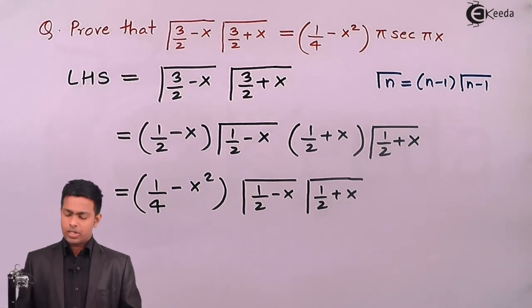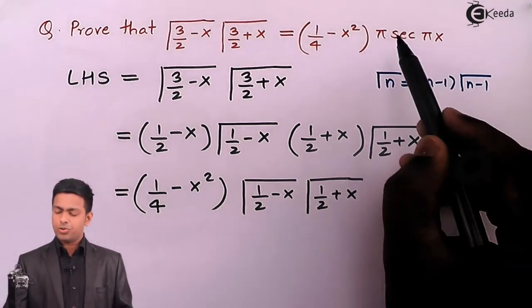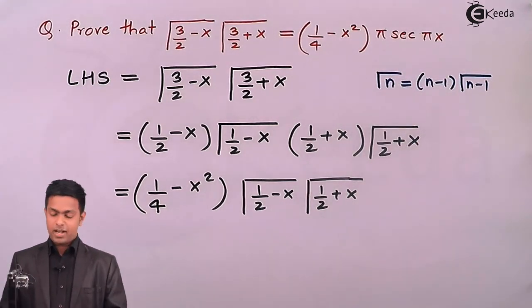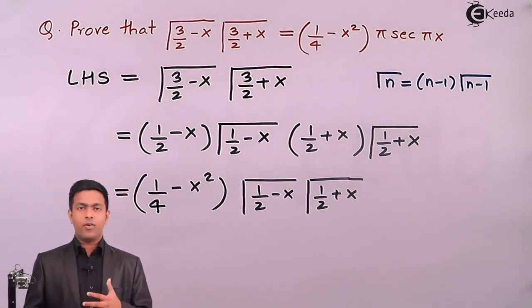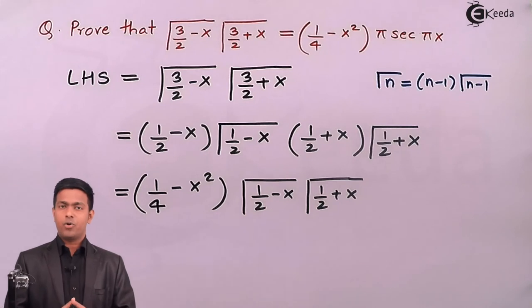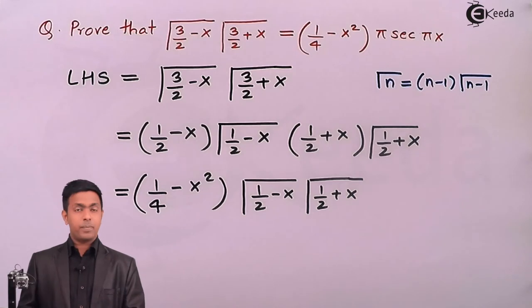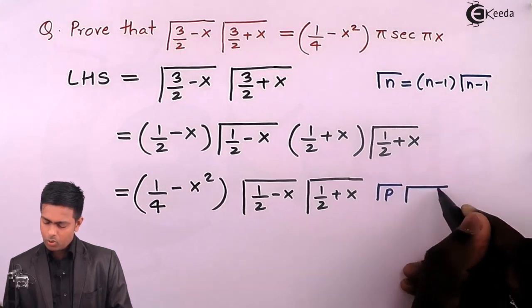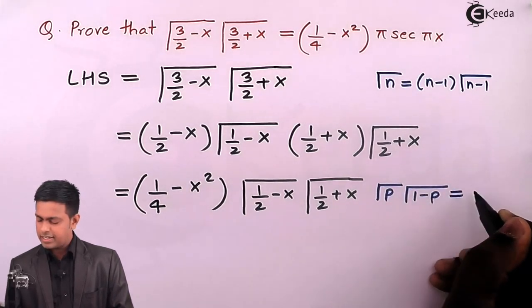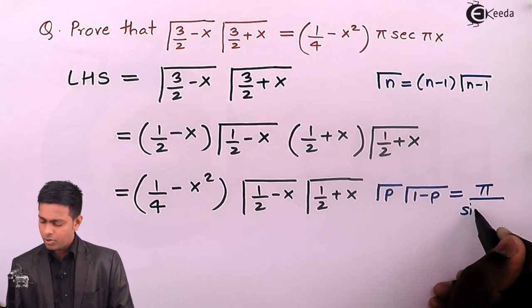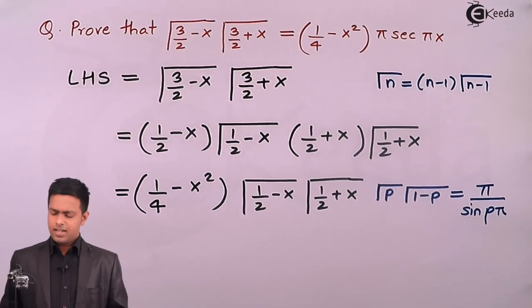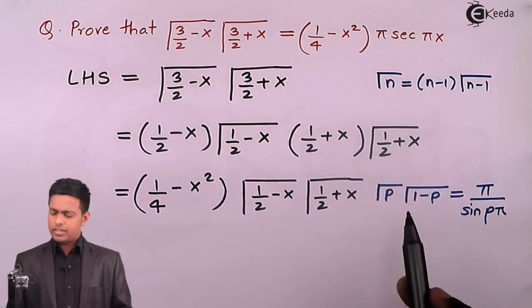Now the question arises: how to prove that these two gamma functions are equivalent to π times sec πx? Whenever I see π, it reminds me about either gamma(1/2) because its value is √π, or it reminds me about the property gamma(p) times gamma(1-p) equals π/sin(pπ). You can see here we have π in the numerator.